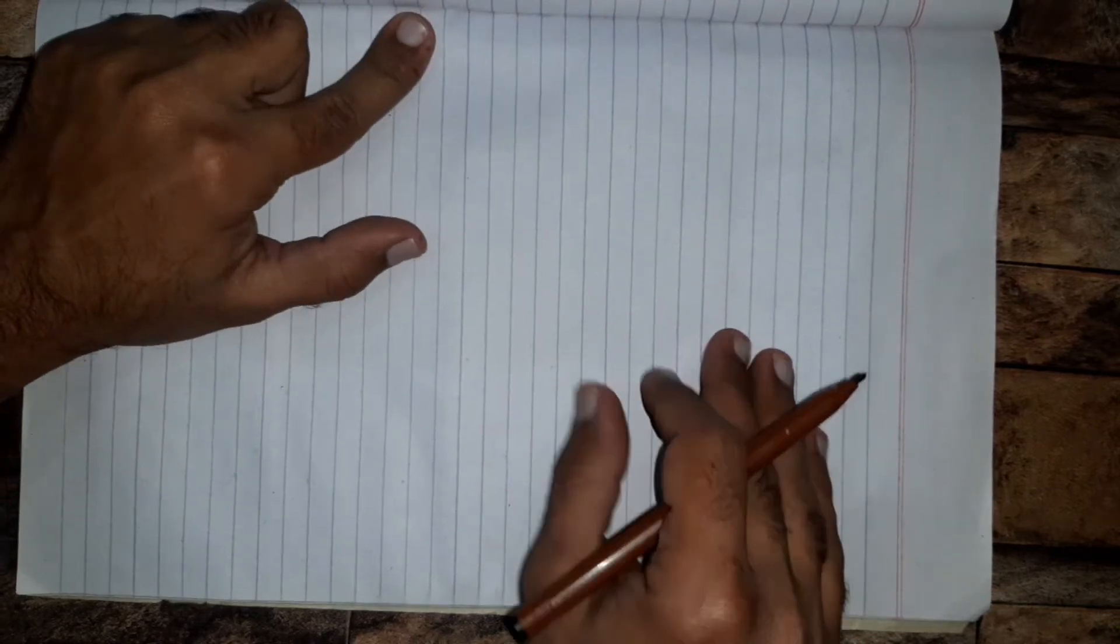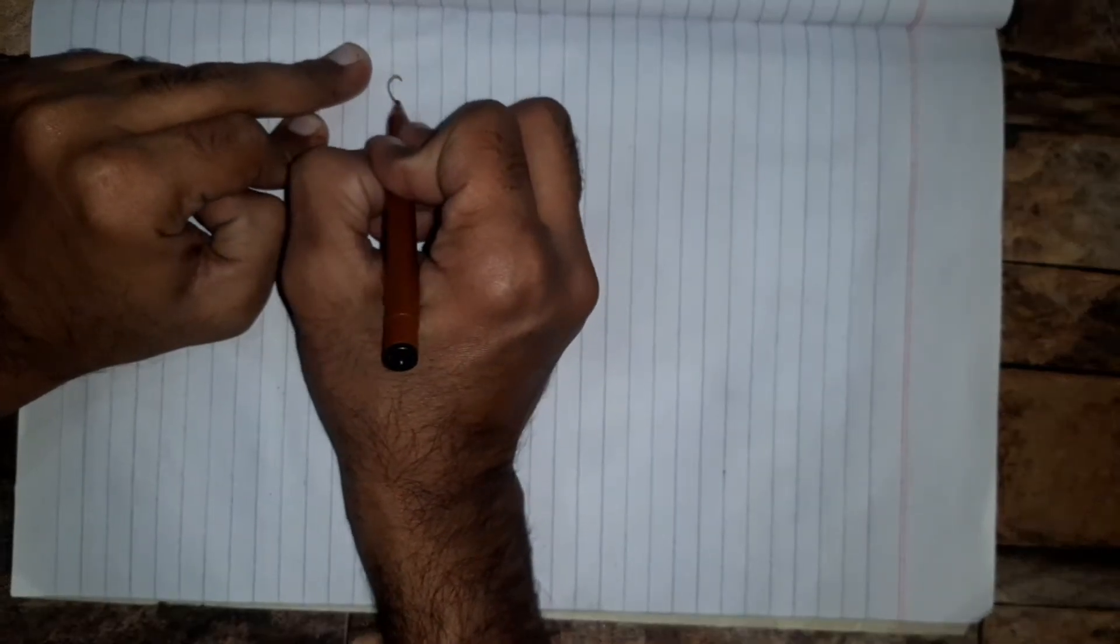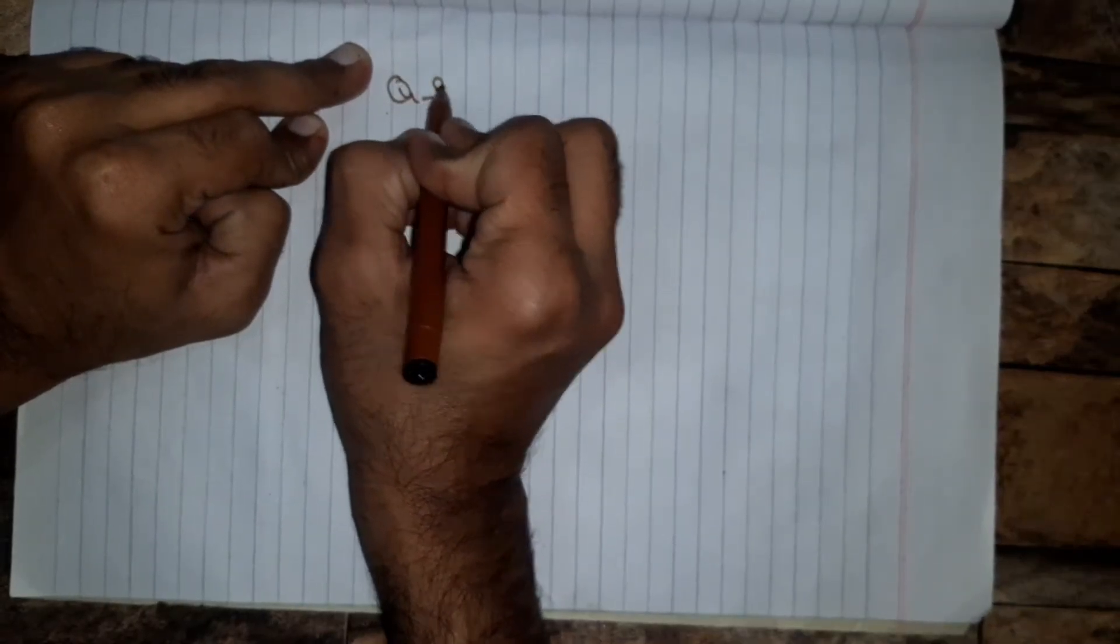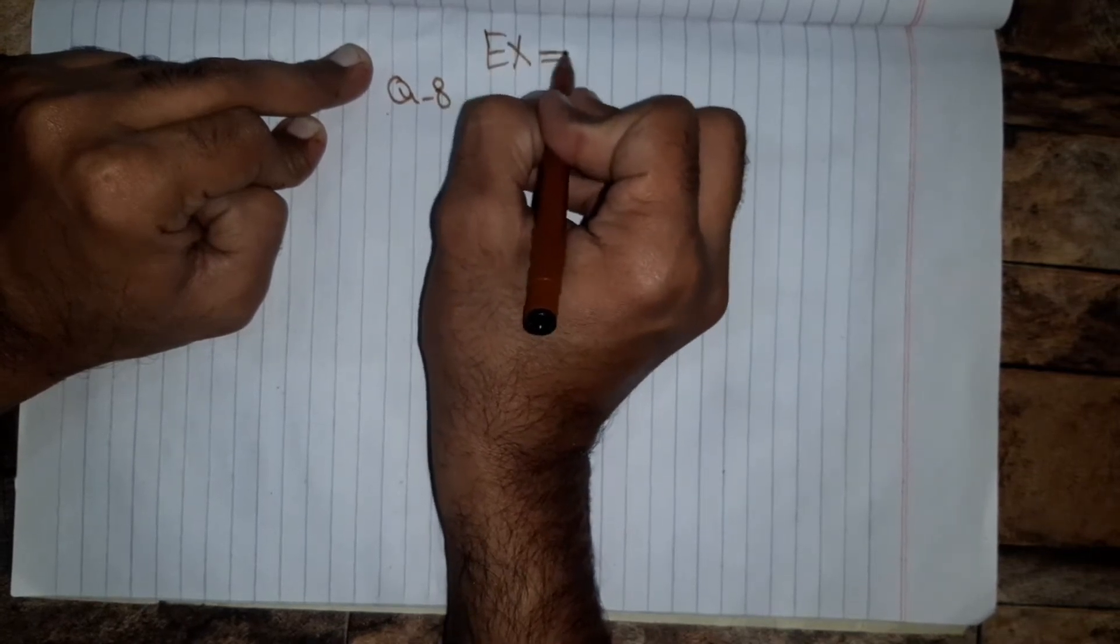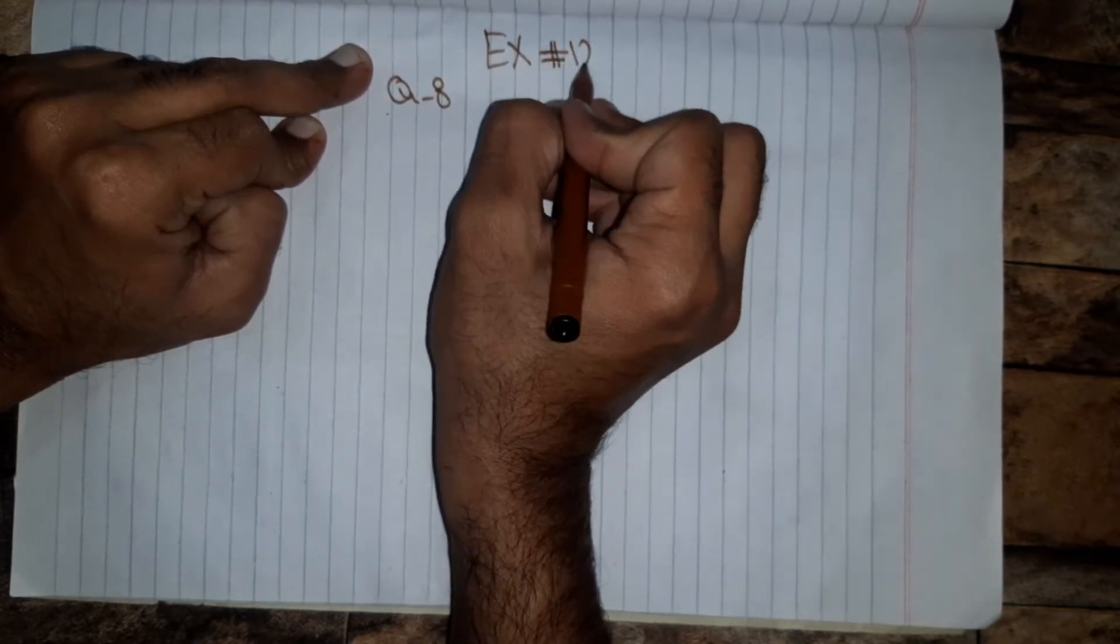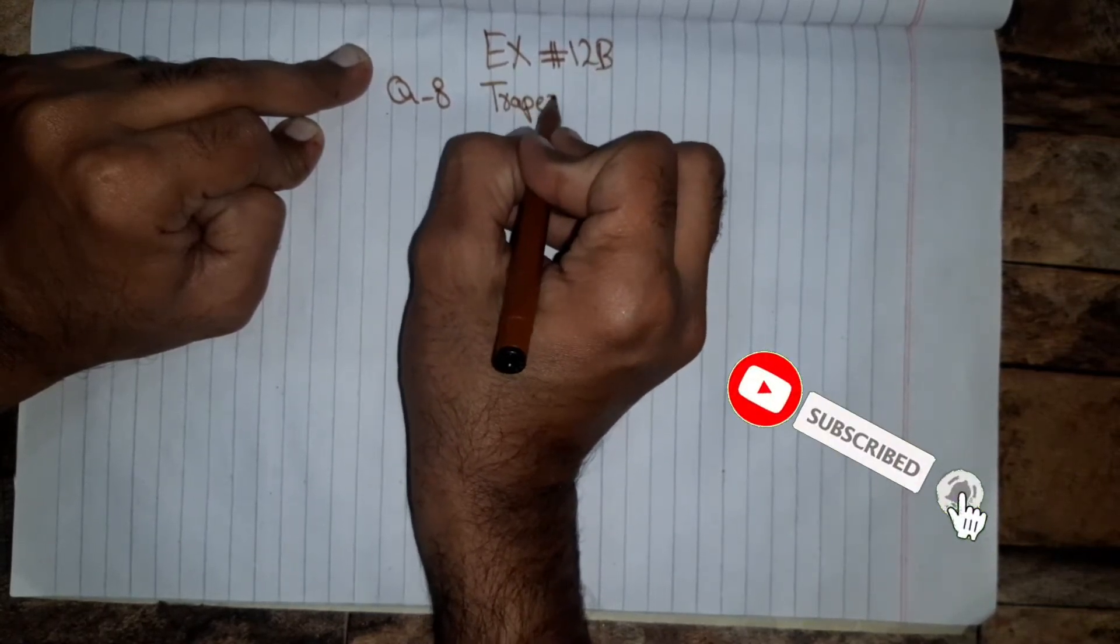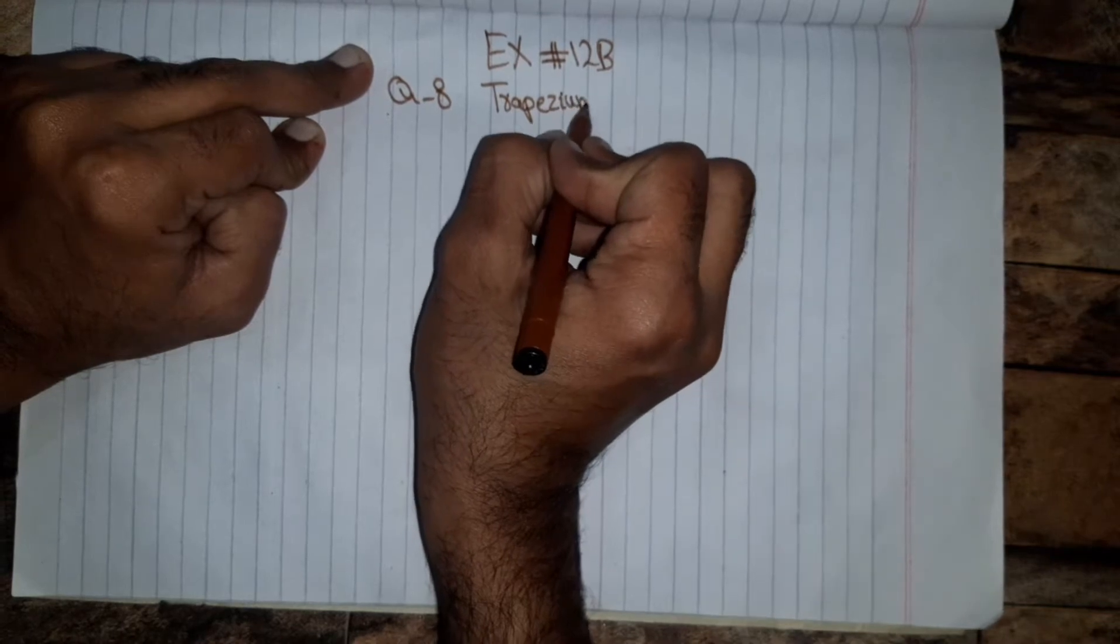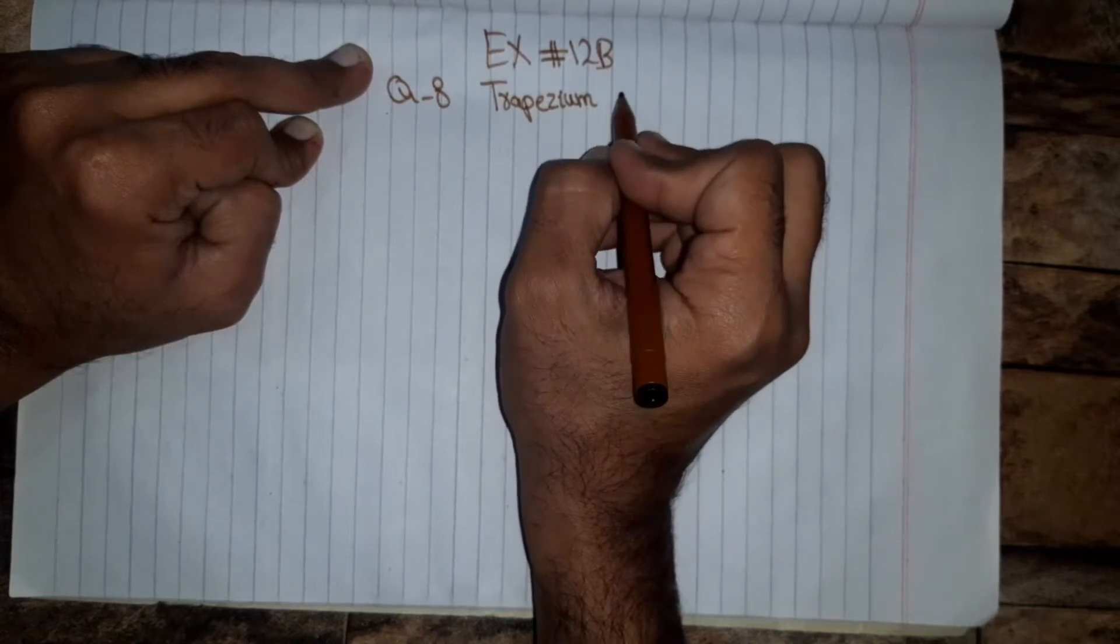Assalamu alaikum, so in this video we will solve question number H of exercise 12B. We have to construct a trapezium. So what is trapezium? Trapezium is a quadrilateral having one pair of parallel sides.